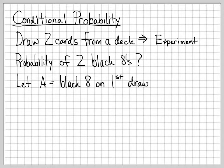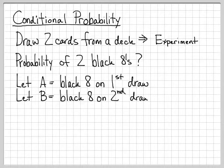So we're going to define this in terms of events, which is what we've been talking about. Let's let event A be the event that we draw a black eight on the first draw, and event B be the event that we draw a black eight on the second draw.